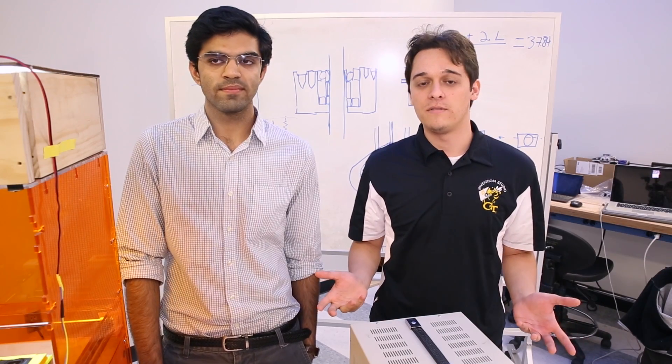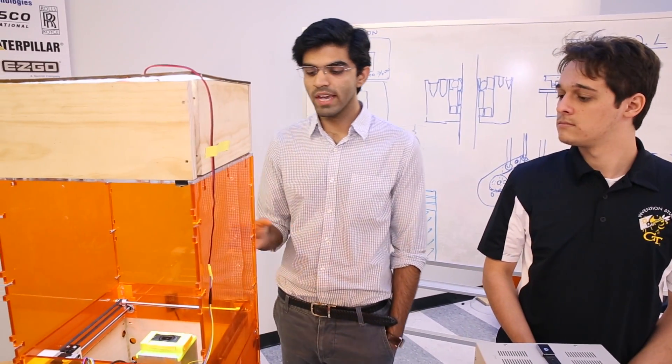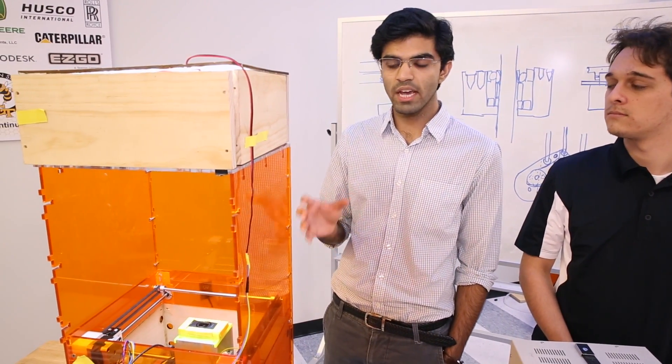To get those cut paths, we developed our own image processing code that outputs motor commands. We then use a belt pulley system to move the XY stage which carries the spindle assembly and camera. Then the Z stage is lifted up to initialize the cut.